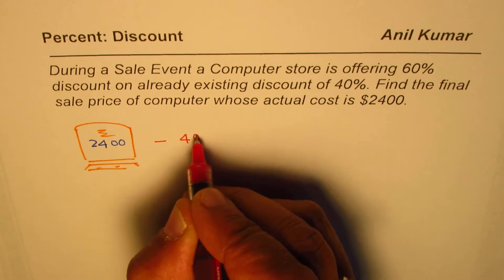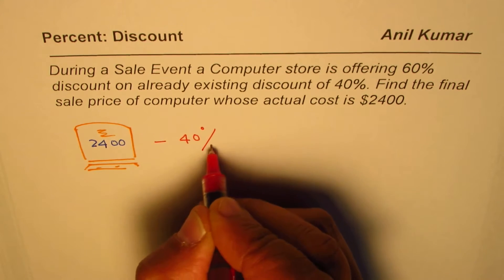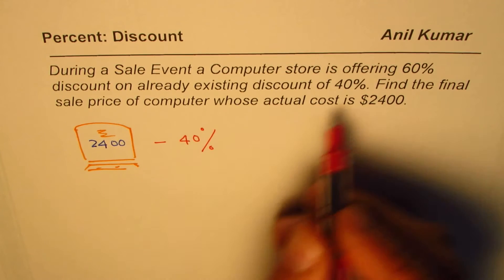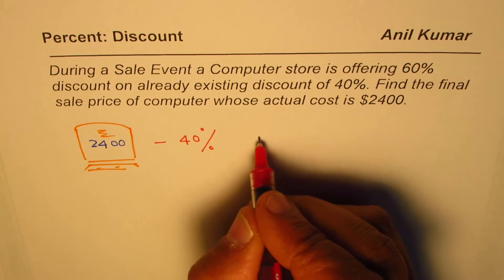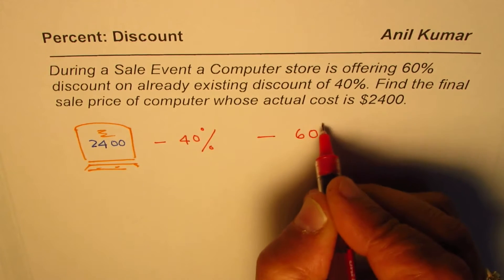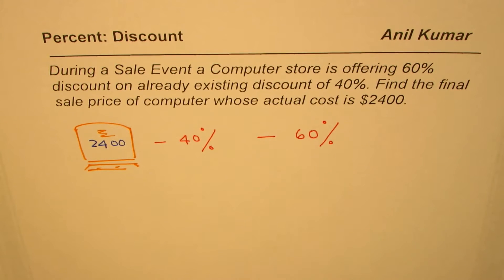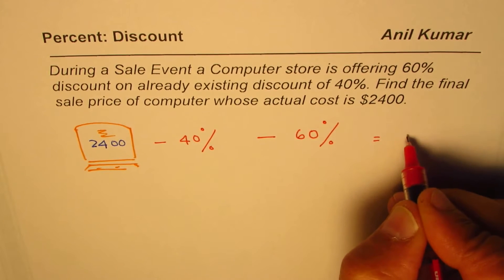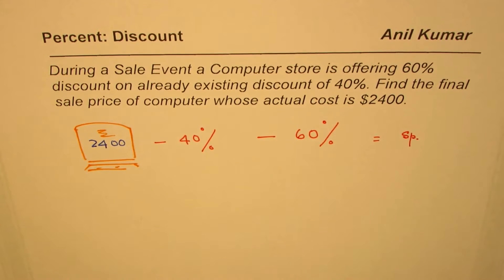So it's minus 40%, and then based on this, we have a further discount of 60%. That is the case, and we have to find what is the final selling price. You can actually pause the video, answer the question, and then look into my suggestion.